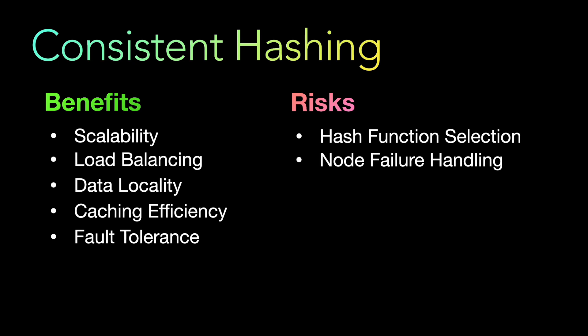Increased complexity is also a risk. Implementing consistent hashing adds complexity to your system architecture and overall design and management. The need to maintain a consistent hash ring and track node positions in that ring requires additional logic and coordination, apart from your business logic. This complexity can make the system harder to understand, debug, and maintain — especially when dealing with node additions, removals, or failures.